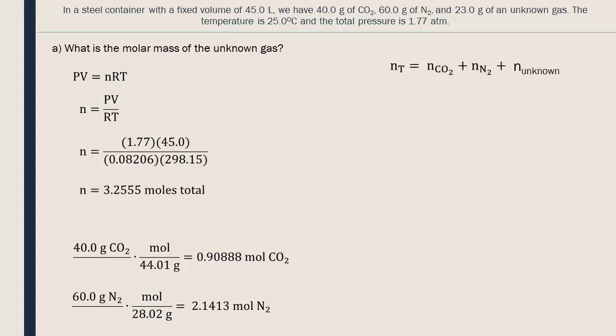The sum of the moles of the three gases must equal the total quantity of moles in the container. By subtracting the quantities of moles of the two known gases, we obtain the number of moles of the unknown gas.